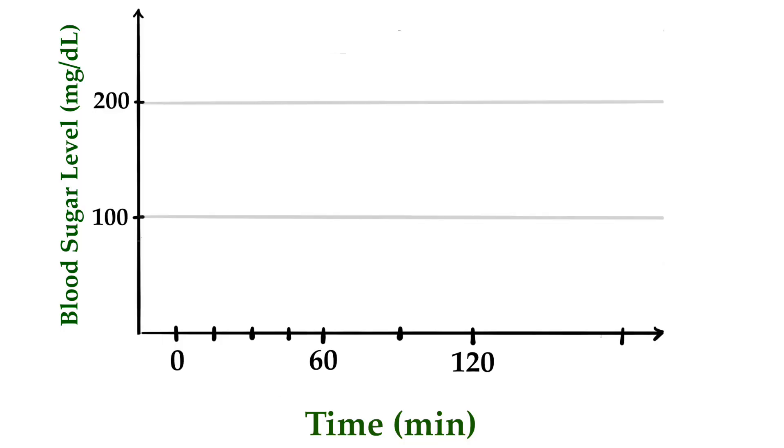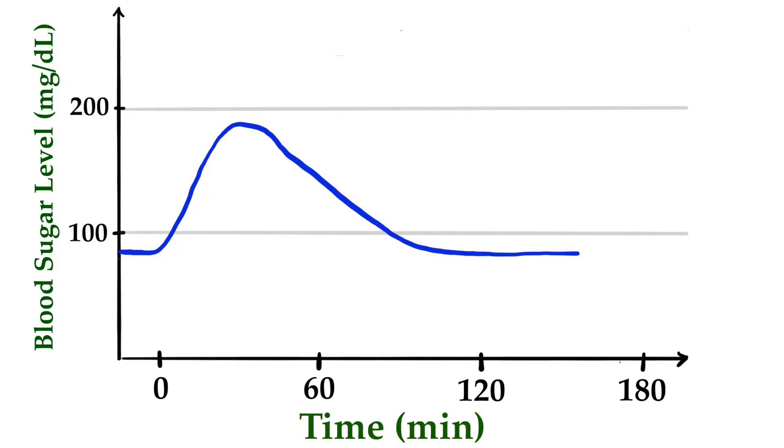Blood draws are taken at least at 0, 15, 30, 45, 60, 90, and 120 minutes. You can probably imagine that blood sugar will rise quickly and quite a bit even in healthy people after drinking a beverage with 50 grams of pure glucose. So let's imagine the blood sugar response of our participant to drinking 50 grams of glucose looks like this.